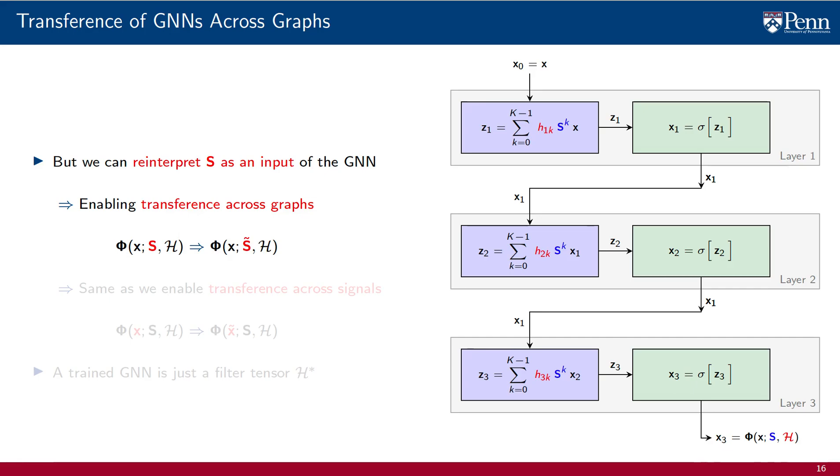Indeed, for a given filter tensor, we can execute the GNN using a graph S as an input or using another graph S tilde as an input. This is analogous to transferring the GNN across signals. For a given filter, we can execute the GNN with input signal X and we can also execute the GNN for input signal X tilde. At the end of the day, what matters is that a trained GNN is just a filter tensor H star. The filter tensor can be executed on different graphs in the same way in which it can be executed on different signals.